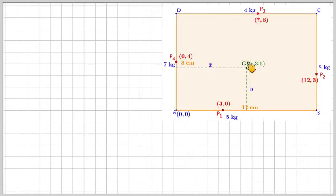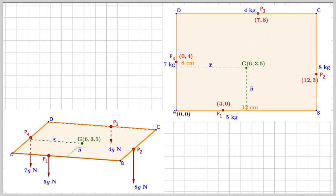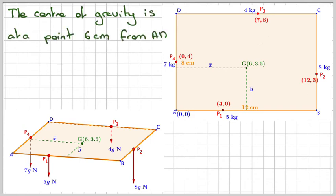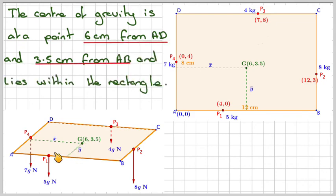So if we draw the diagram, it will look like that, where this is the 6, and this distance here is 3.5. So if we look at it like in 3D, it will have to look like that. So these particles will give the centre of masses. So final conclusion, the centre of gravity is at a point 6 centimetres from AD, and 3.5 centimetres from AB. And then it also lies within the rectangle, which it must do.